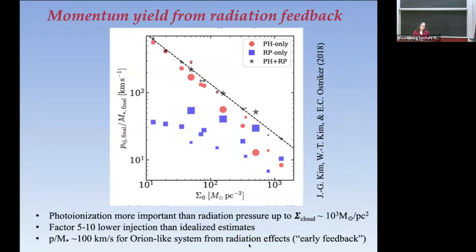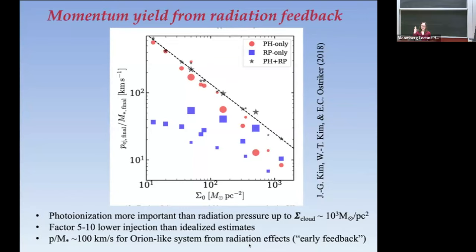The thermal forces are overestimated more than the radiation pressure force because radiation pressure is still mostly outward, whereas thermal pressure forces are along the gradient and can point in many directions — more of a geometric effect. We did a convergence study confirming the factor of 5–10. For a cloud like Orion, the momentum yield you get is of order 100 km/s per stellar mass, rather than 1000.